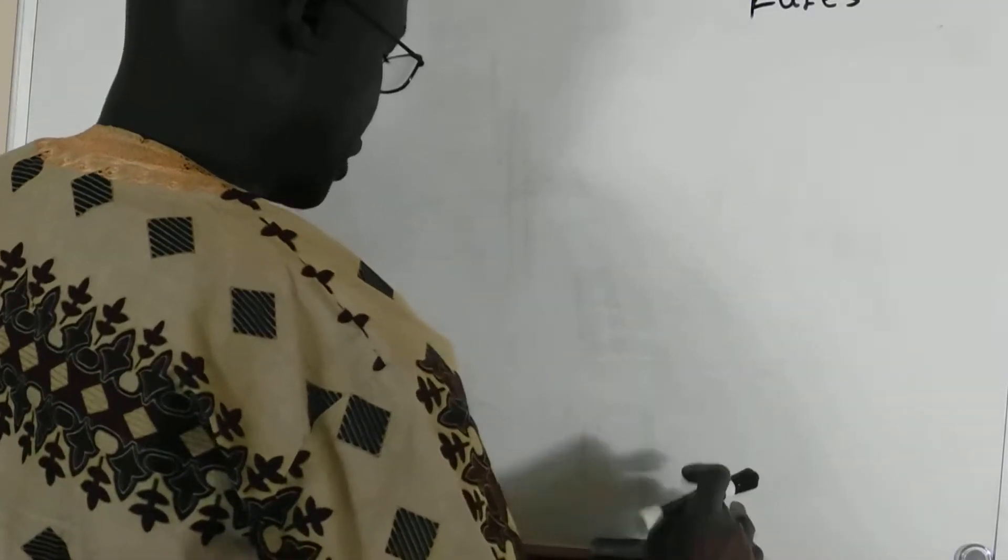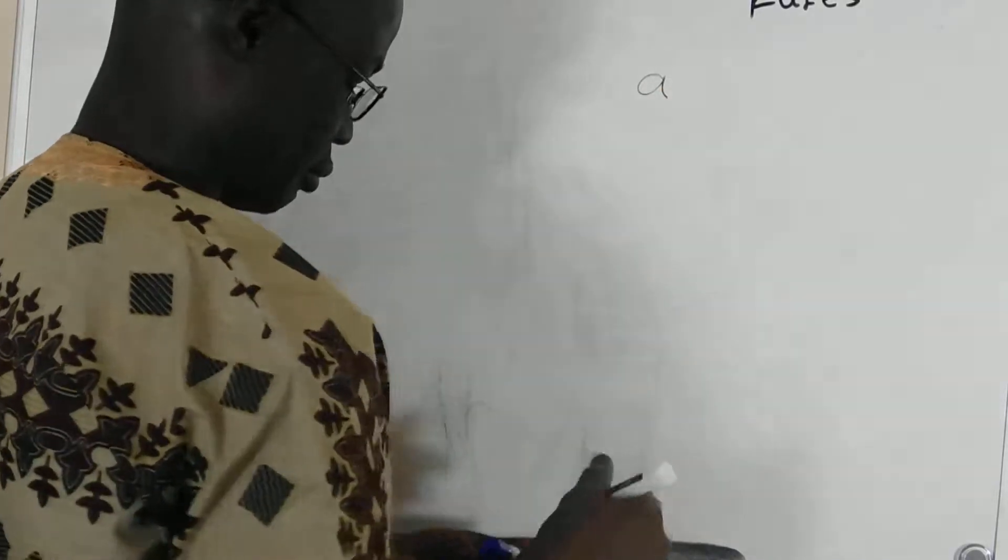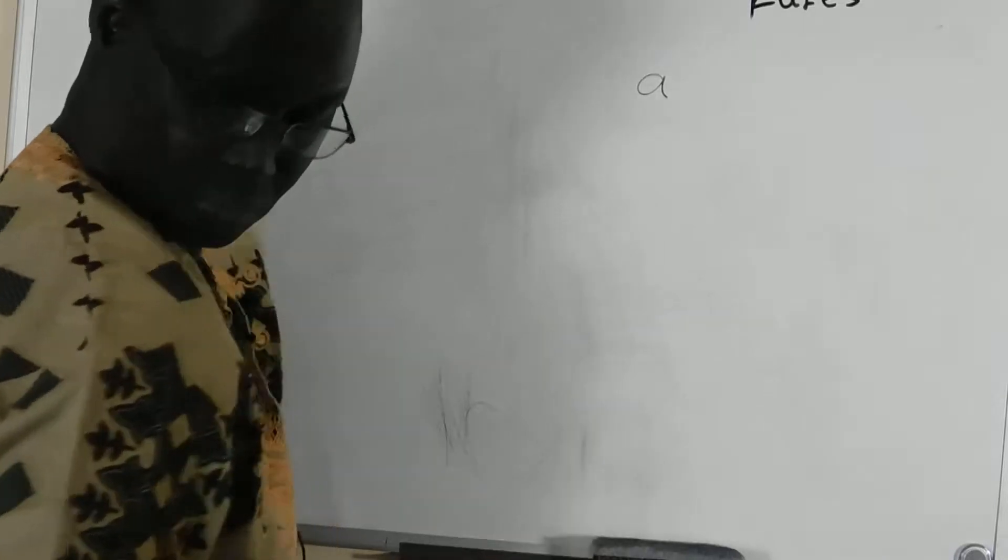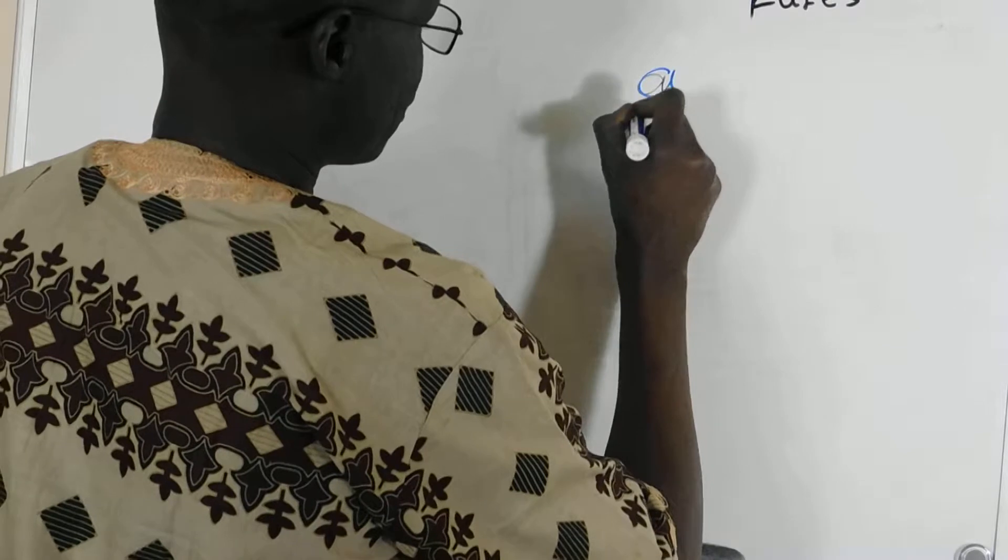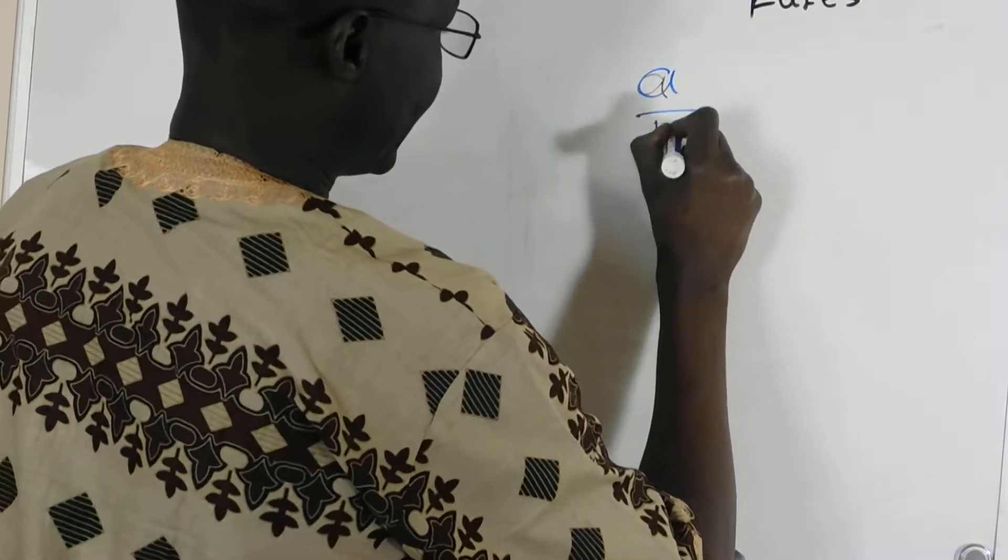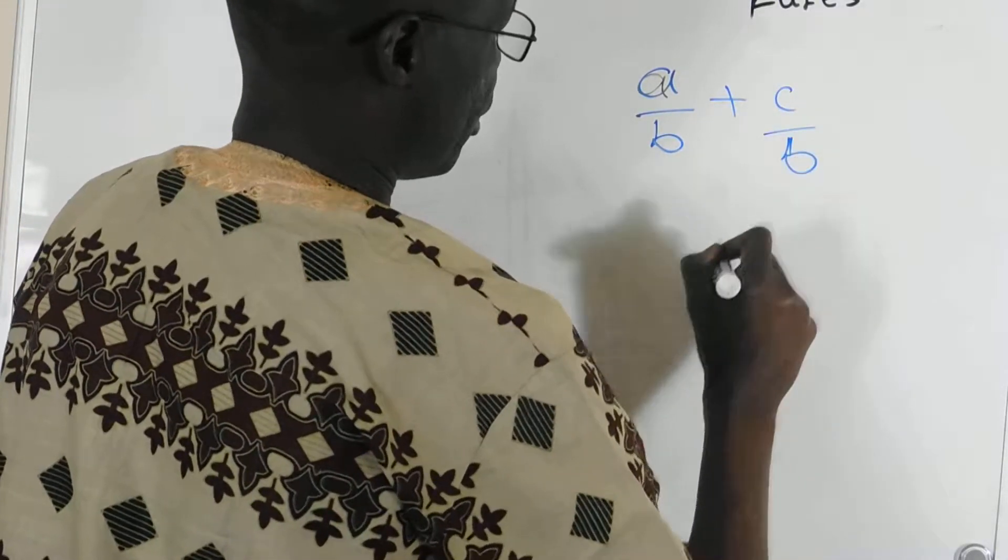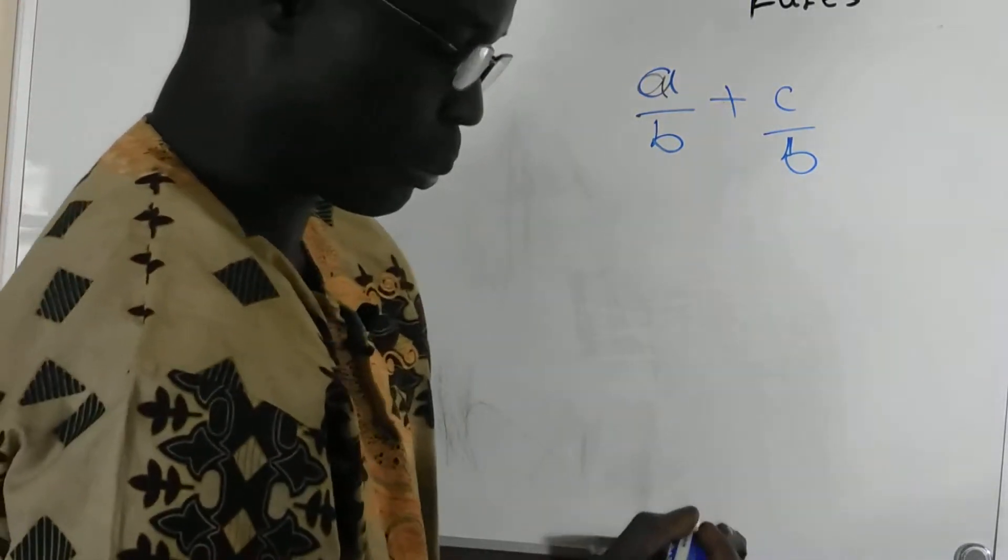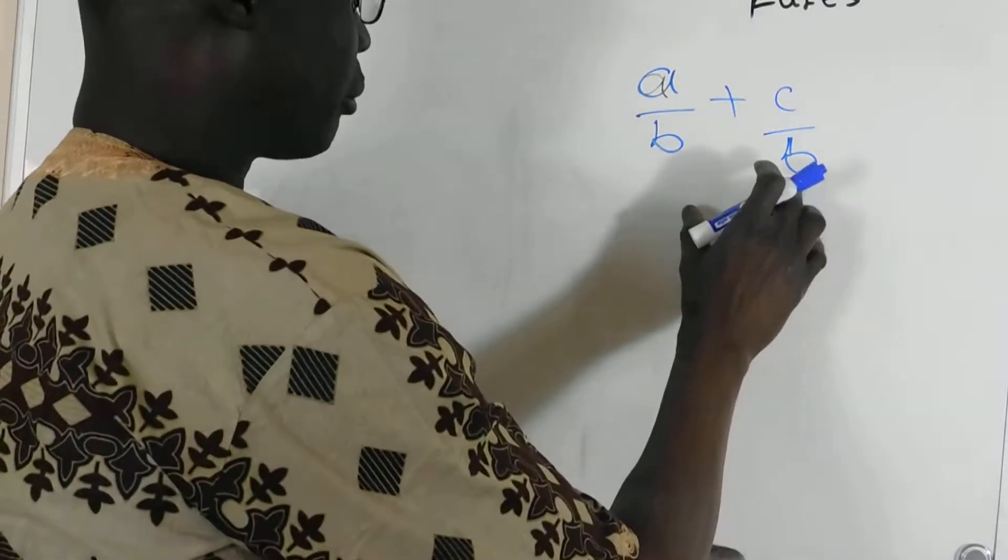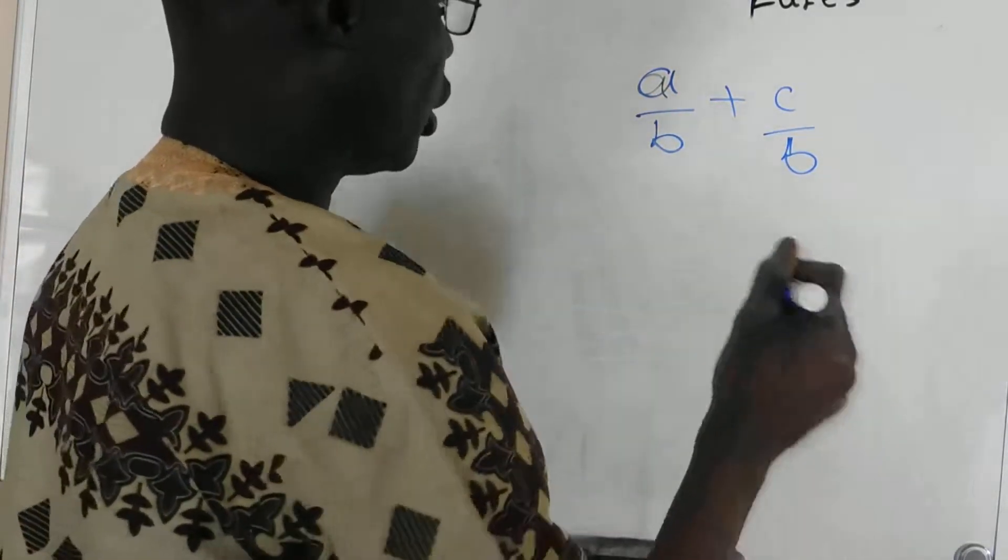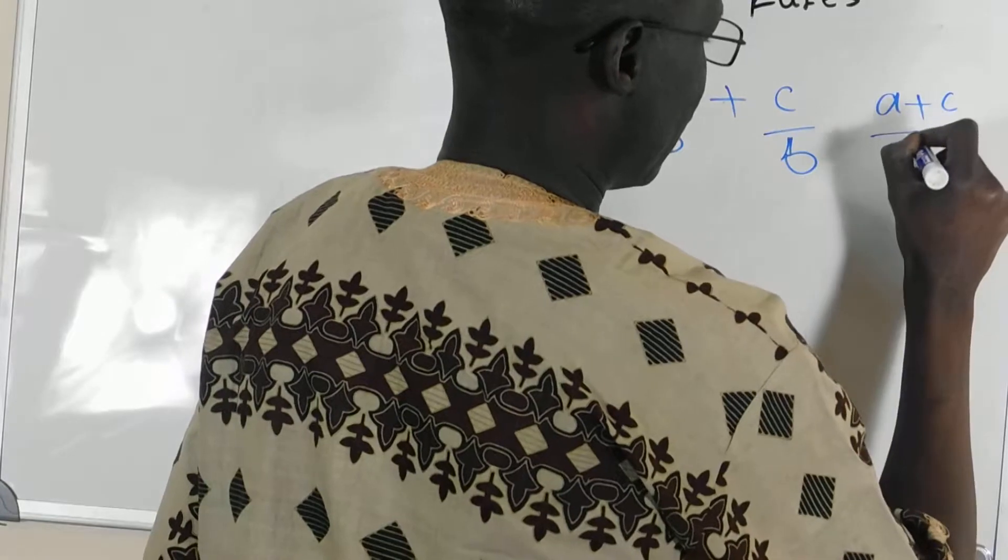So, in addition, if I have A over B, if I have C over B, in this case, if we have the base, the number on the bottom, they are the same, we just add the number on the top, which is A plus C over B.